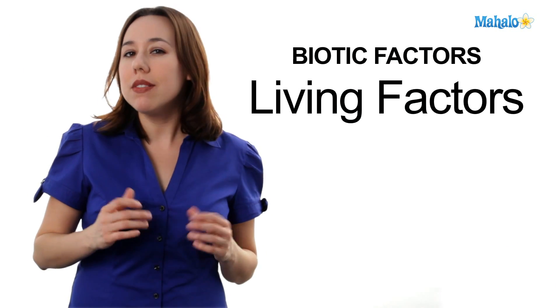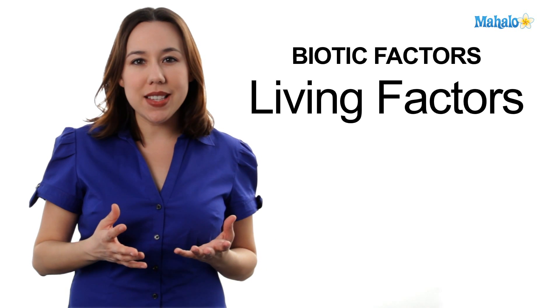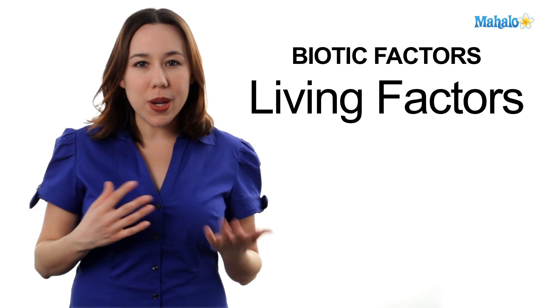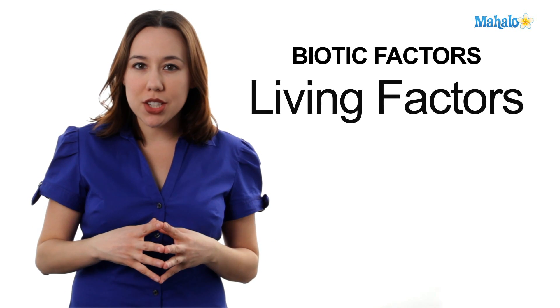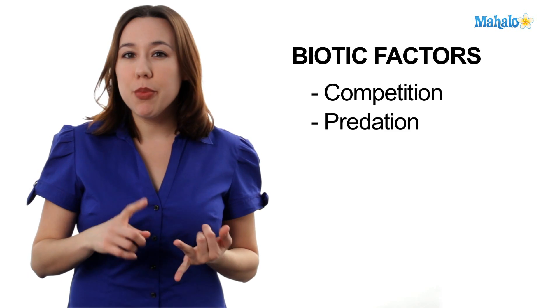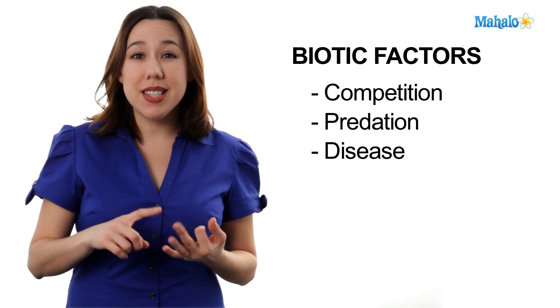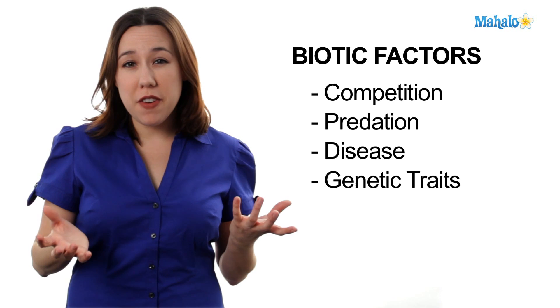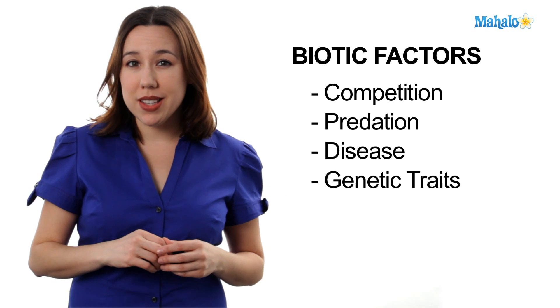What about biotic, or living, factors? These are things that other organisms put pressure on a population — things like competition for resources, predation, disease, and even unfavorable genetic traits. All of these factors are in constant play and help to ensure that no one population grows completely out of control, helping to maintain the delicate balance of a natural ecosystem.